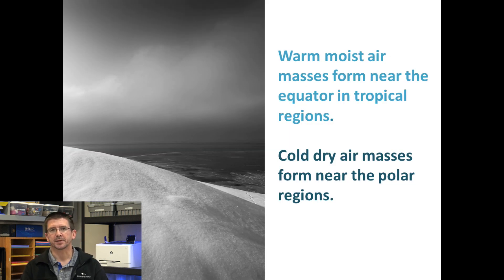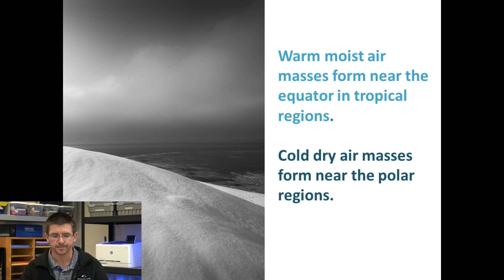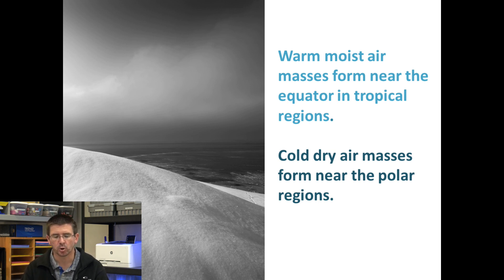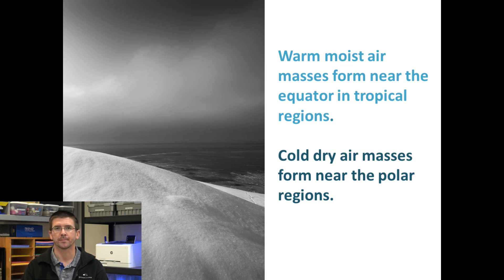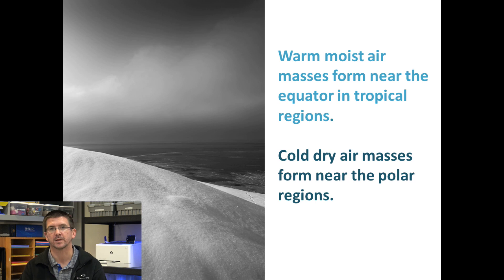Air masses can form in different areas around the globe, and they can actually change as they move. Typically, warmer, moister air masses are formed in tropical regions near the equator, and cooler, drier air masses form in polar regions. We also have maritime air masses that form over the ocean, and continental air masses that form over large areas of land.